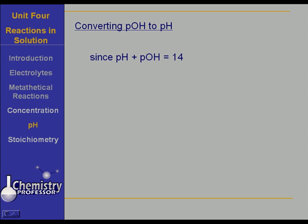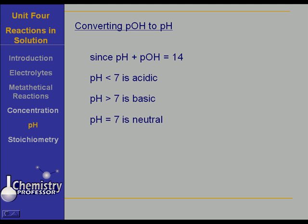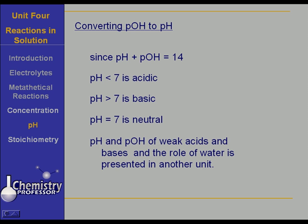Since the pH plus the pOH is 14, if the pH is less than 7, your solution is acidic. If your pH is greater than 7, your solution is basic. And of course a pH of 7 is neutral. The pH and pOH of weak acids and bases, and how water dictates this, is presented in another unit.